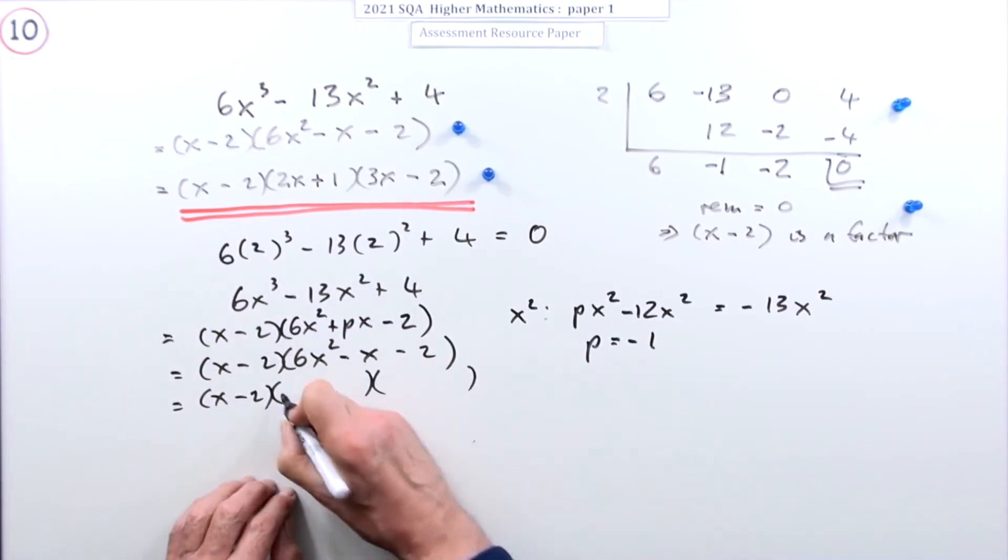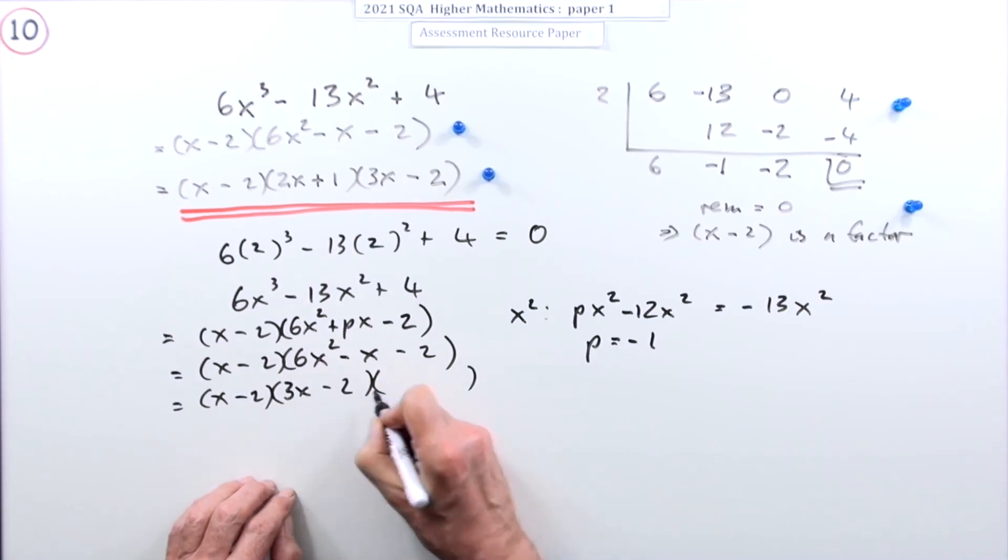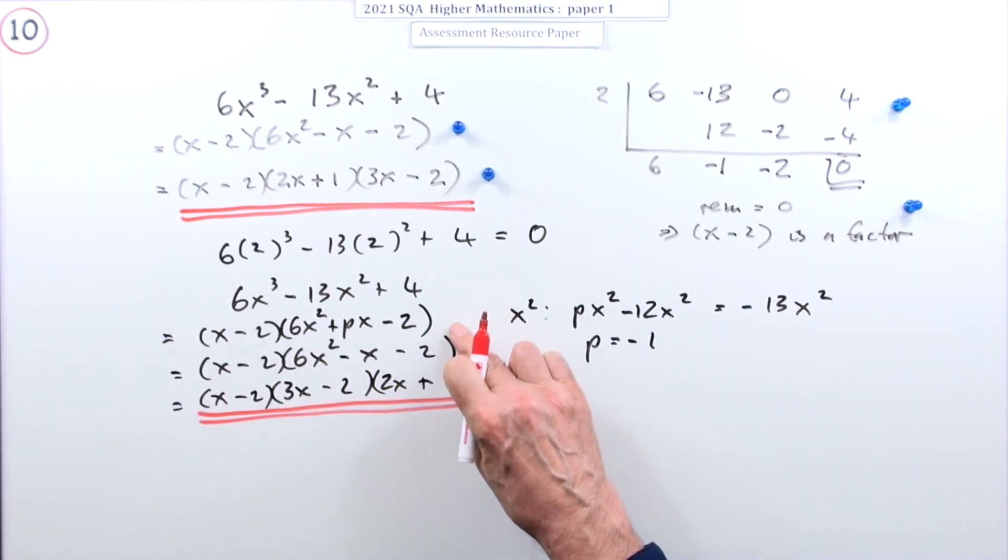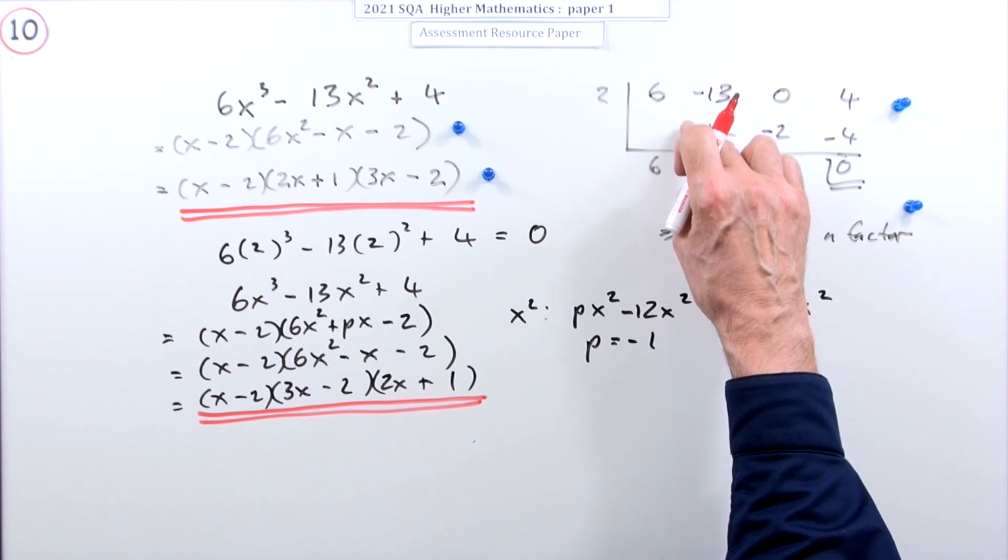x minus 2, factorize that yourself. Now 3x minus 2, 2x plus 1. And that would be the way of doing it without using a synthetic division table.